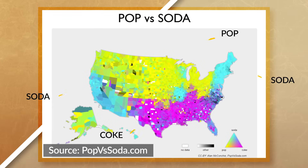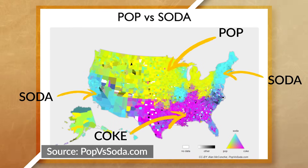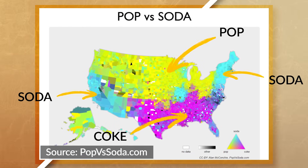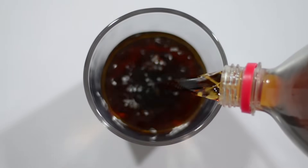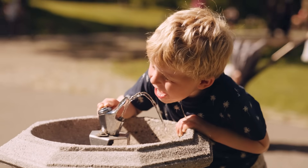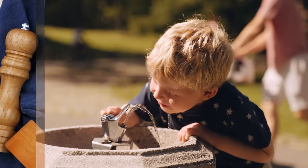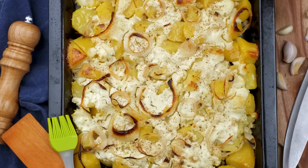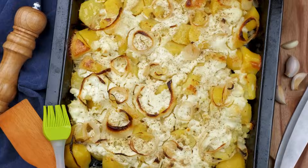Dialects can be differences in the spelling, vocabulary, and/or pronunciation of certain words. For example, I'm from Minnesota, and here we drink pop, not soda. And when we need to get water, we go to the drinking fountain, not the bubbler. And we sometimes eat hot dish, which is essentially a casserole.